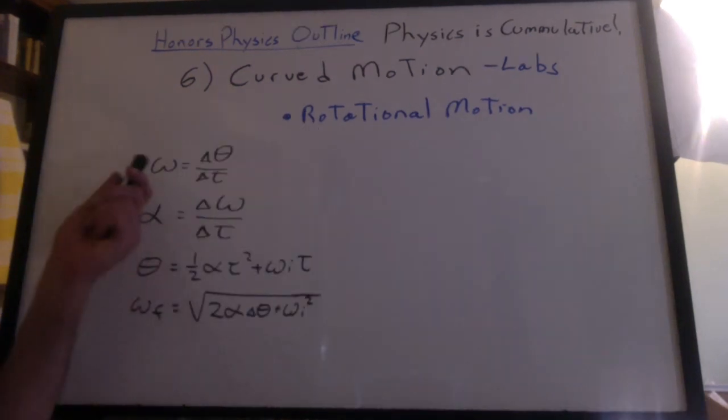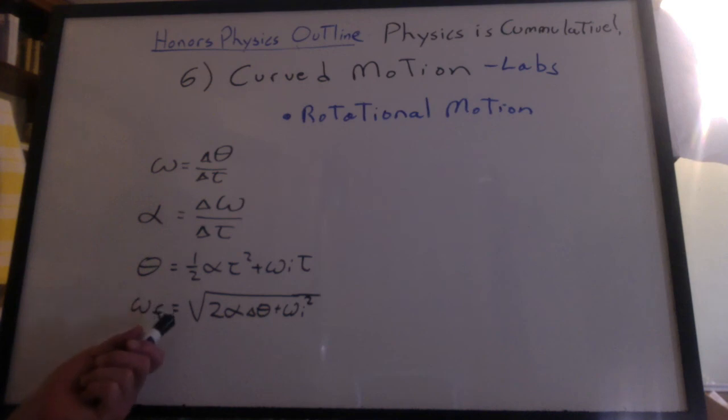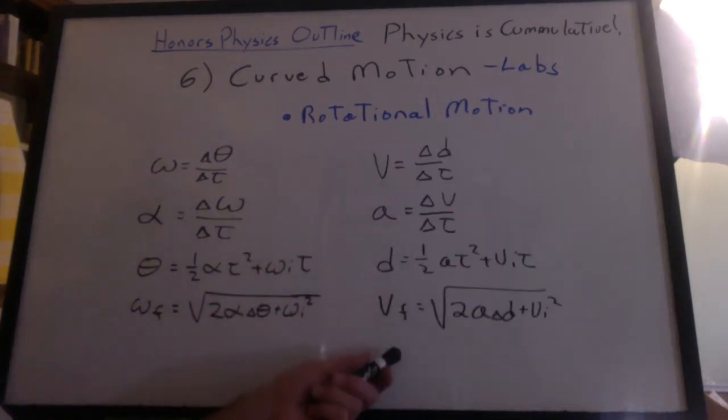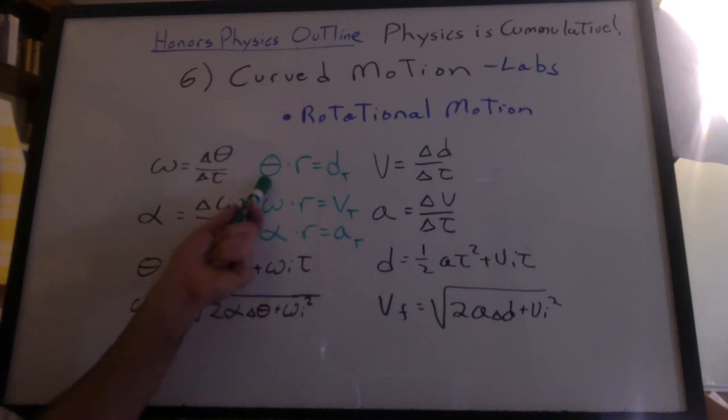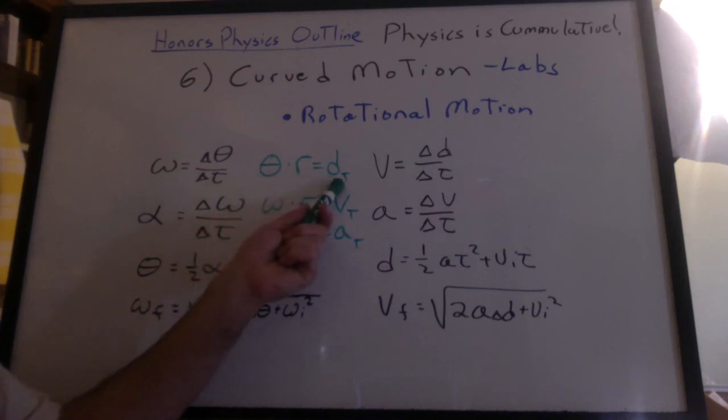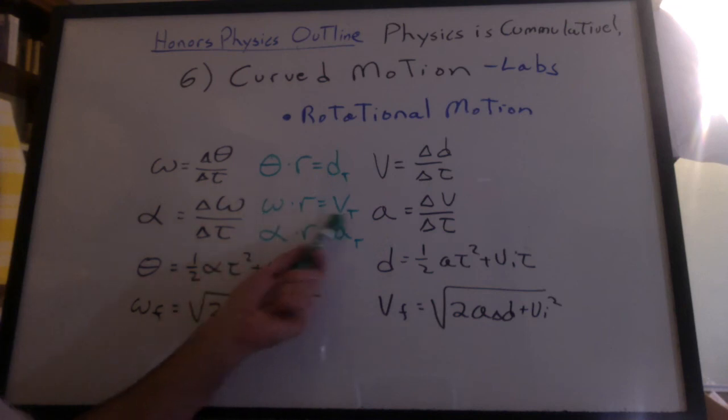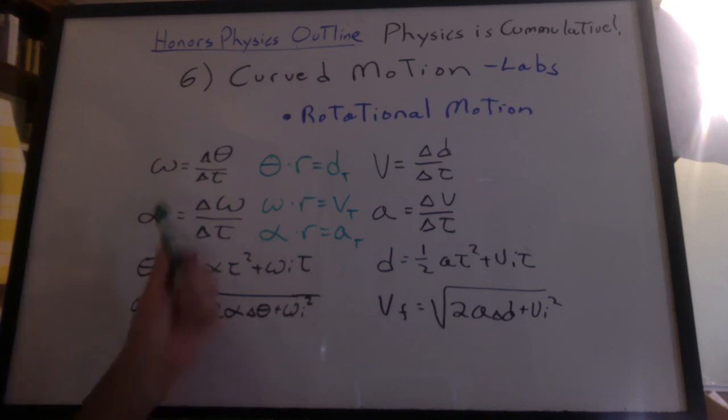We found that all of the kinematic formulas for rotational motion could be found from the linear formulas. Just translate the variables. And to bridge the gap, we saw that theta times r equals the arc length or the tangential distance traveled. Omega times r is the tangential velocity. Alpha times r is the tangential acceleration. All these formulas aren't new. These are just the same formulas with the letters changed.